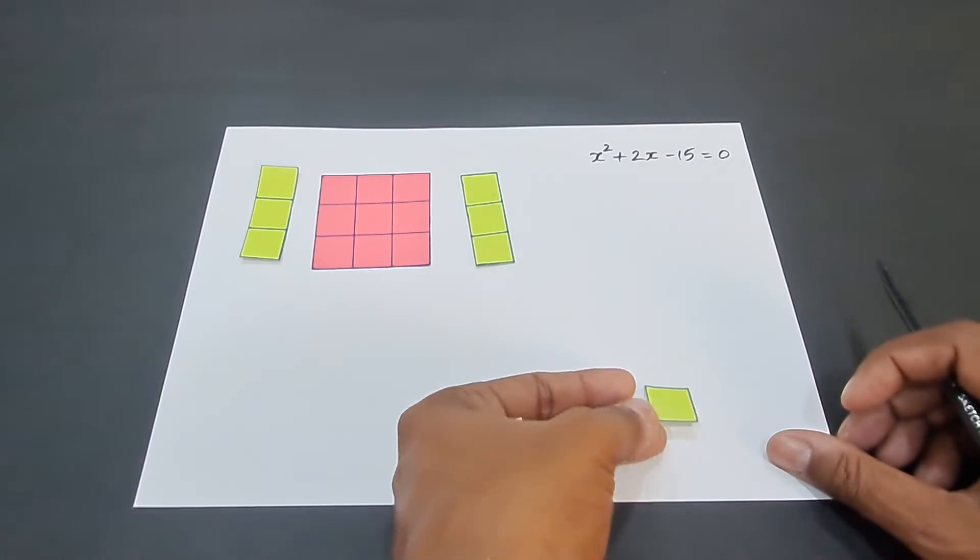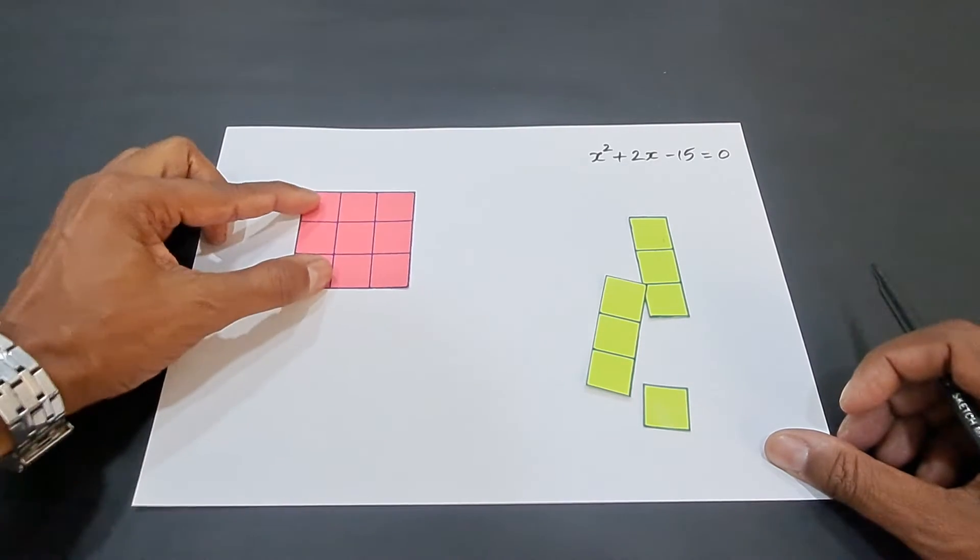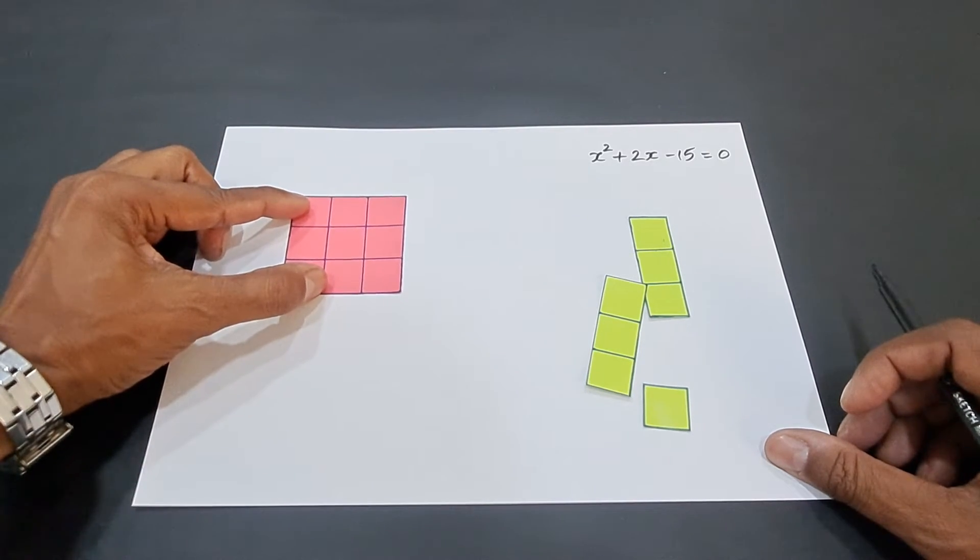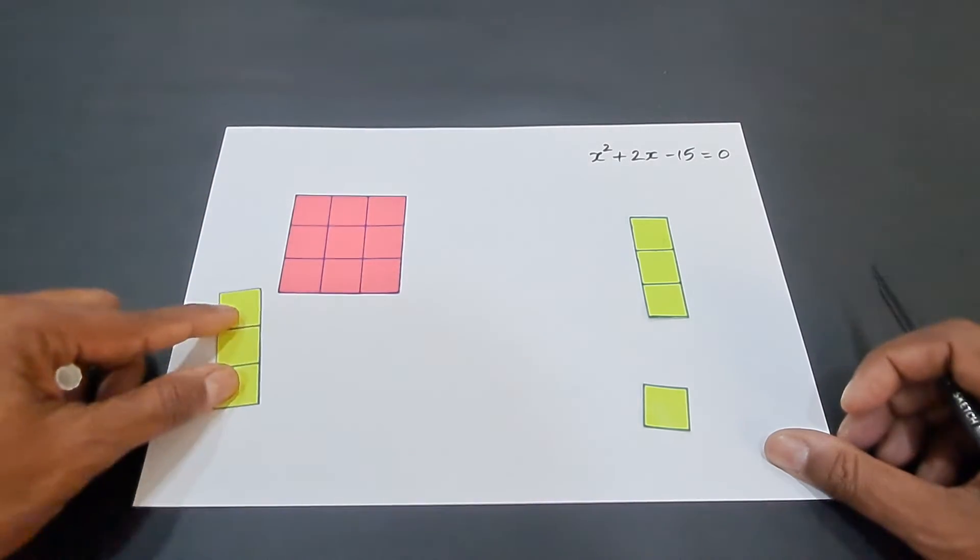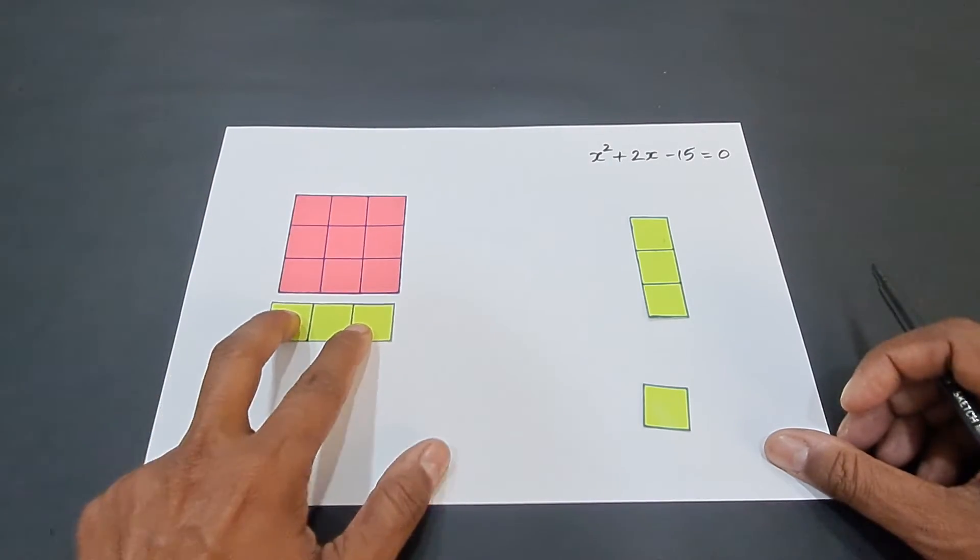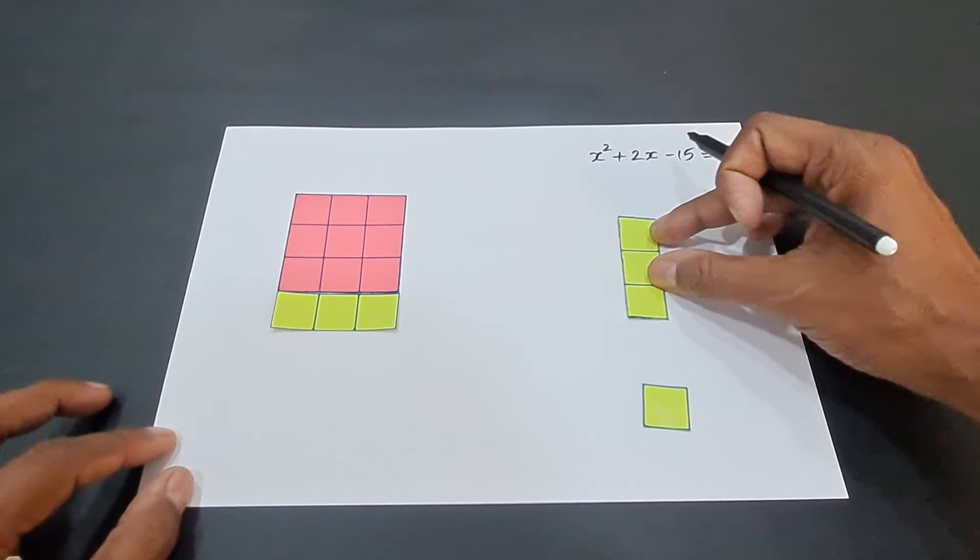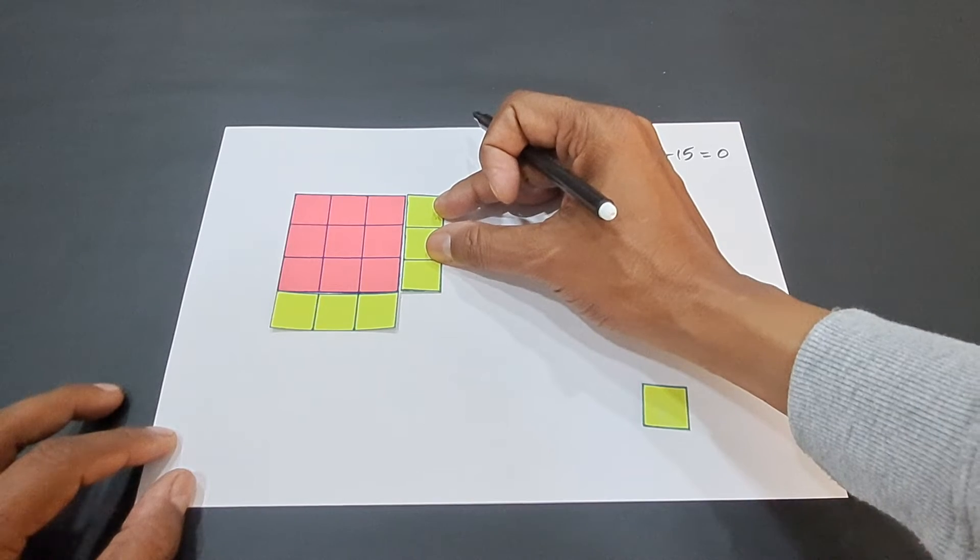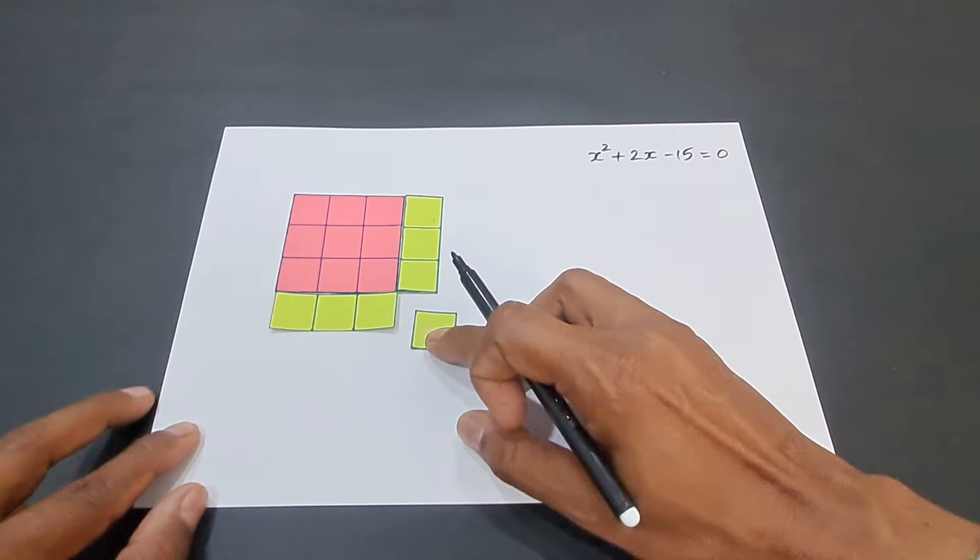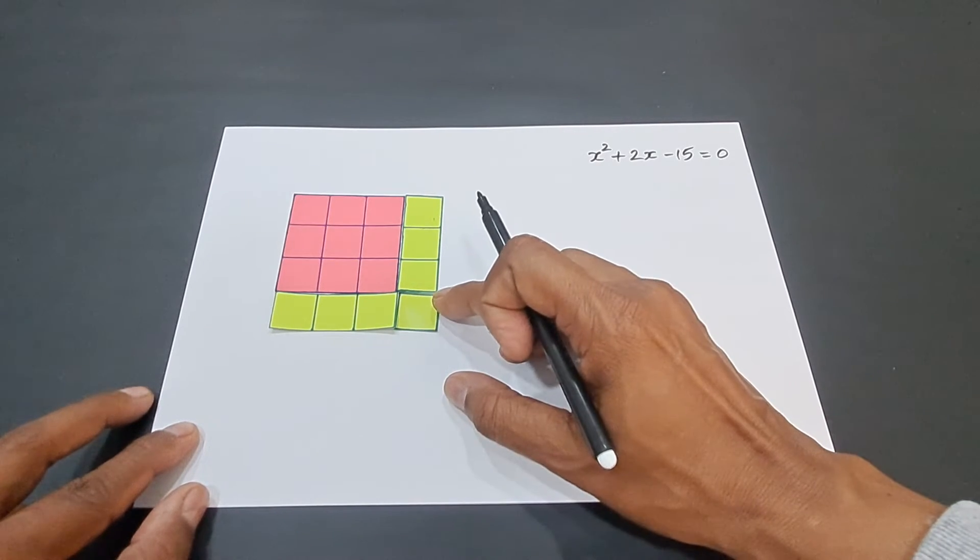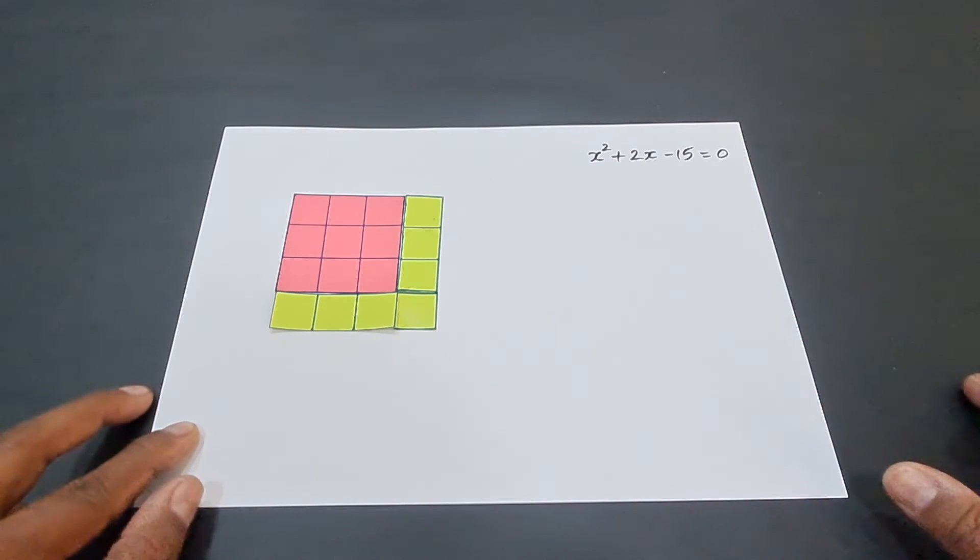What we have to do with all these cutouts is: we will be placing or pasting this 3 by 3 square here on a sheet of paper and then pasting this at the bottom here like this and then pasting this here like this and the final cutout will be filling this empty space here. This forms a big square.